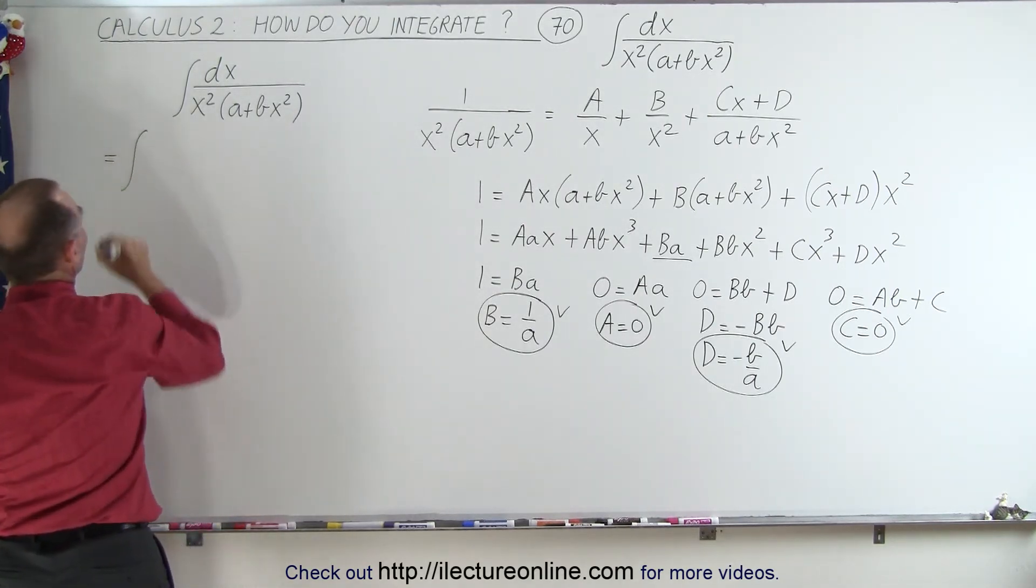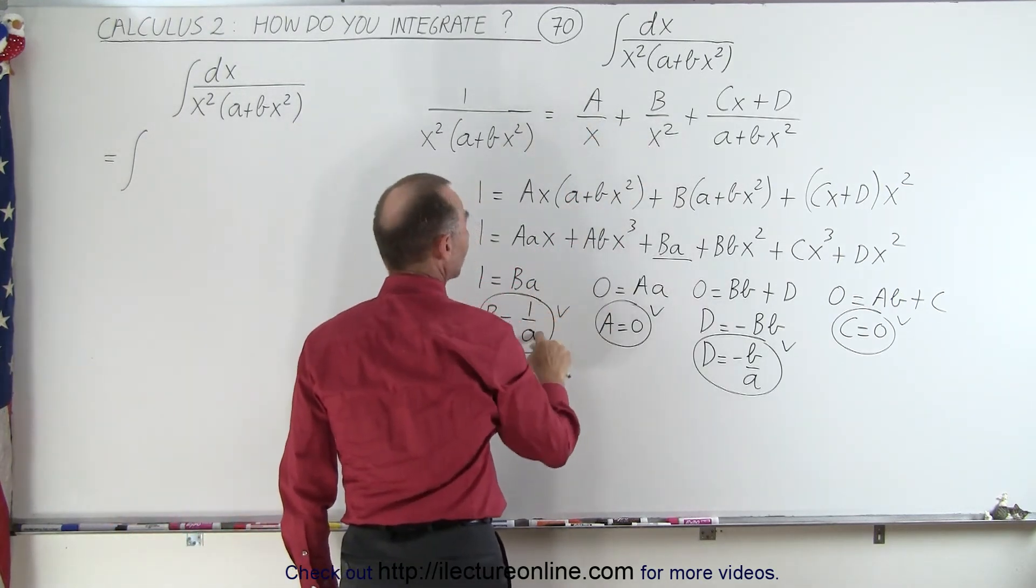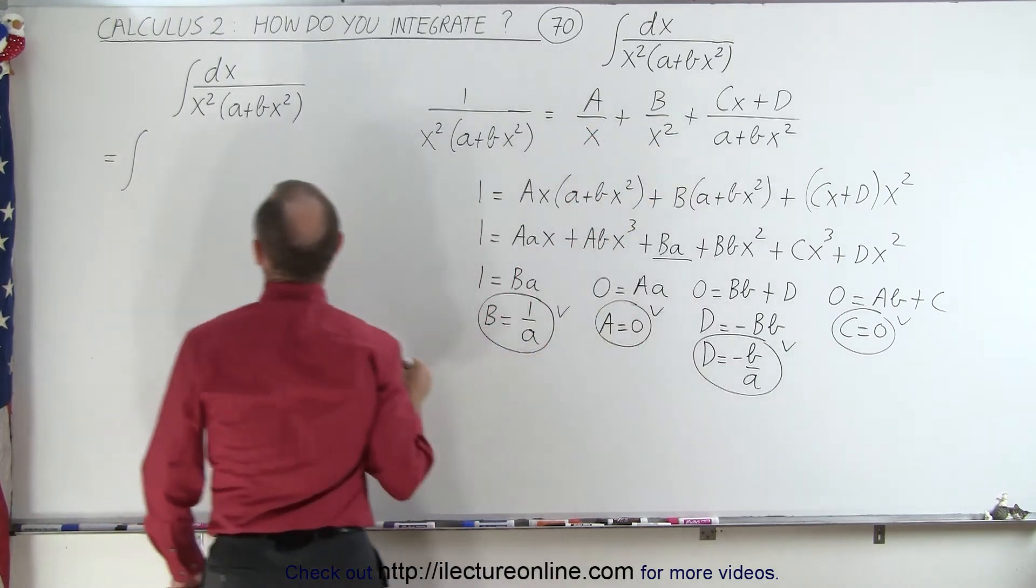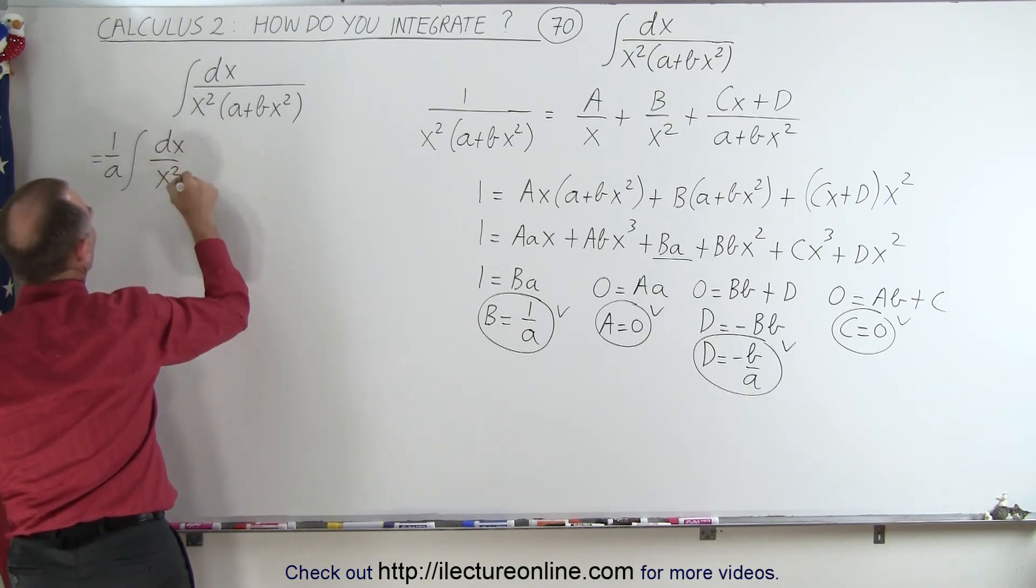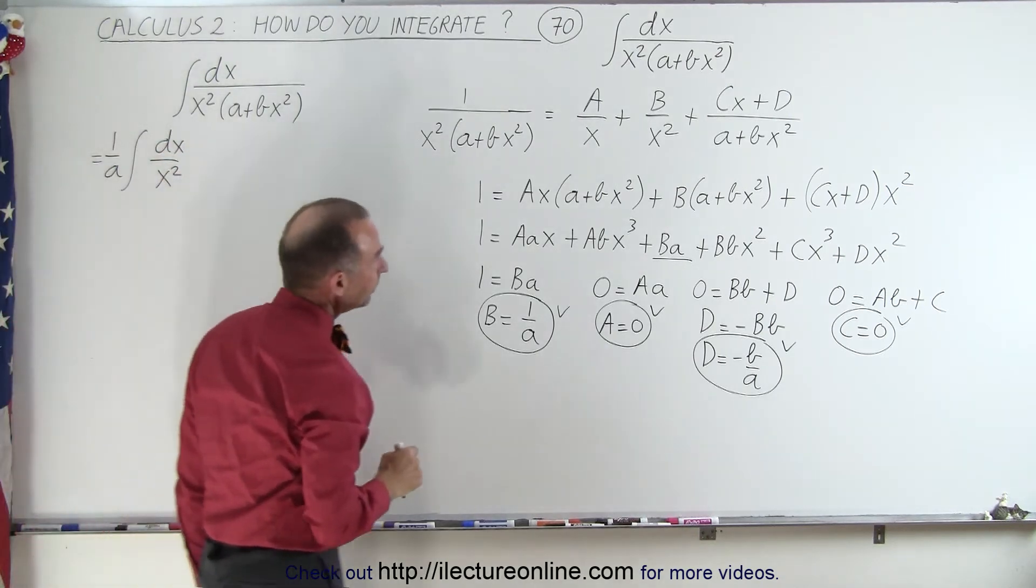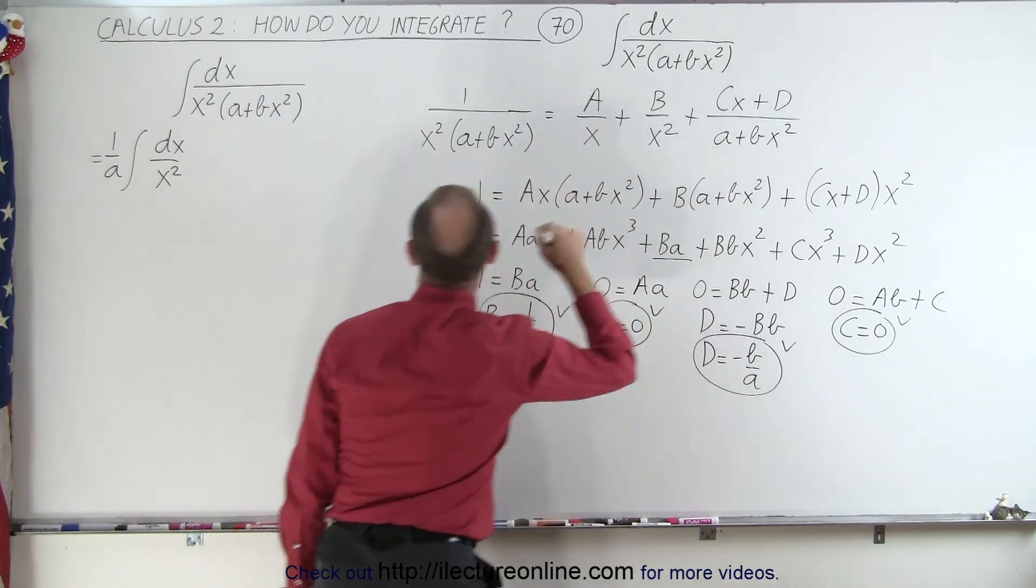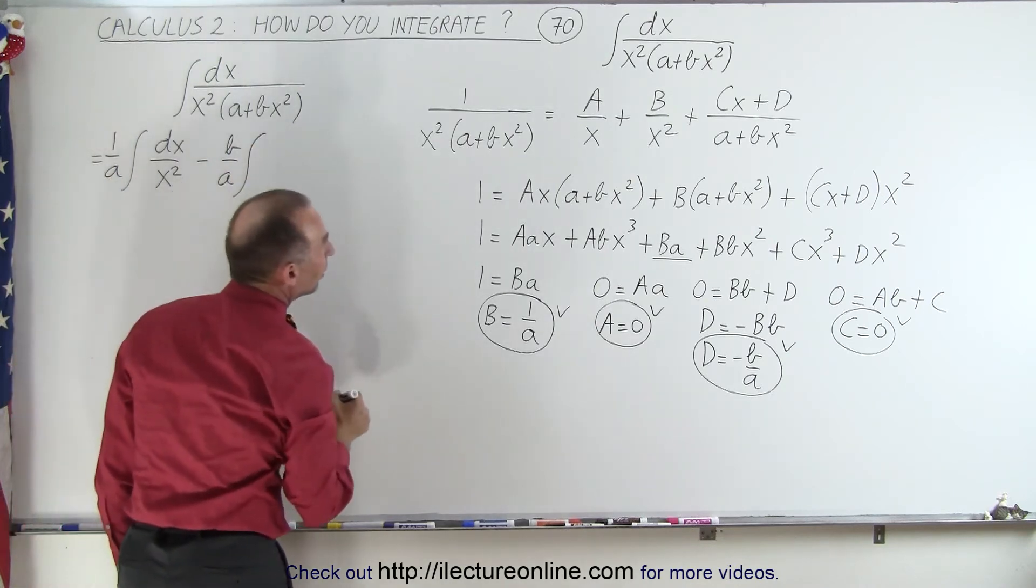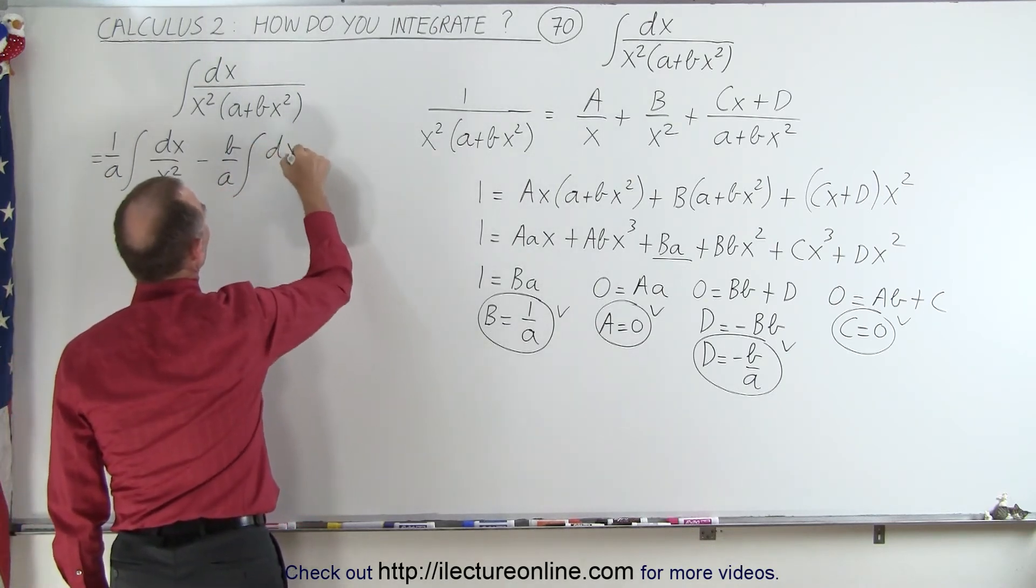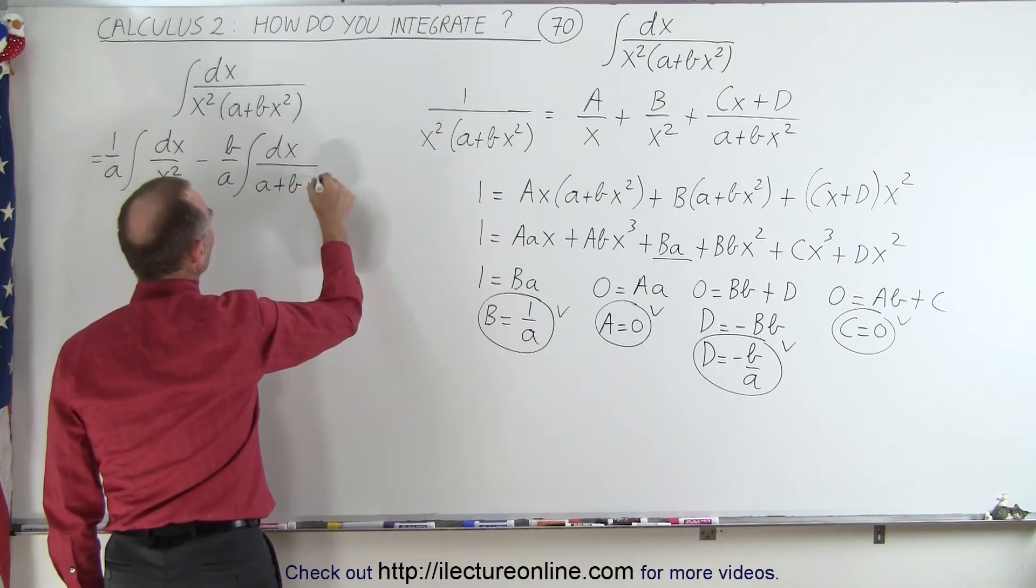This is equal to the integral of, well, since A is 0, we go over here. B is 1 over a over x squared. So I can pull out the 1 over a, and we have a dx over x squared, which is easy to integrate. C is 0, D is minus B over a. So we have minus B over a times the integral of dx divided by a plus Bx squared.